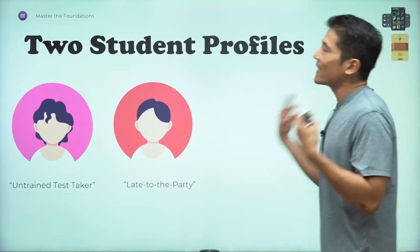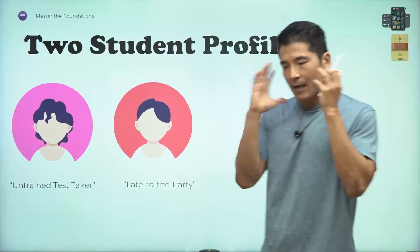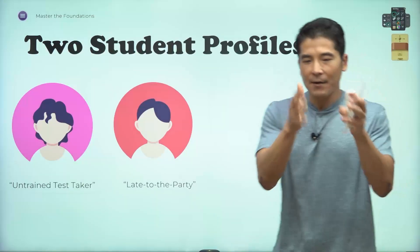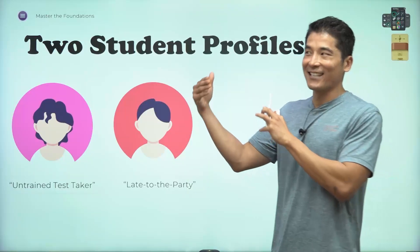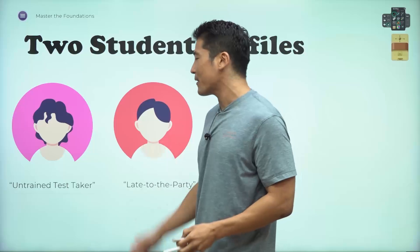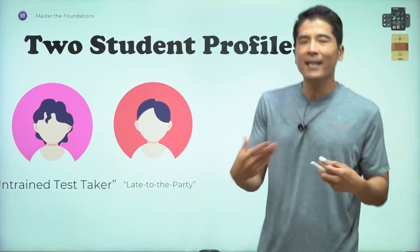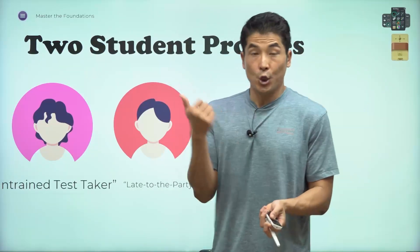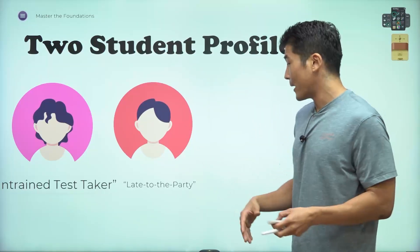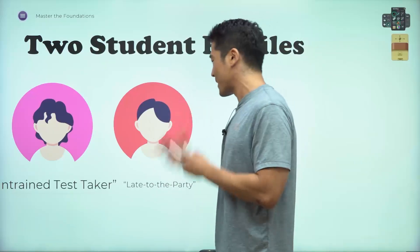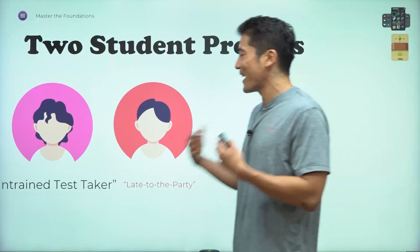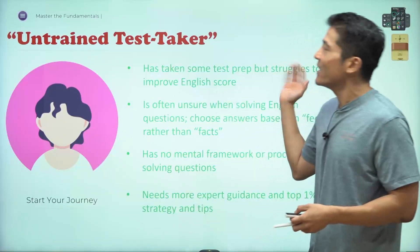Who exactly is this course for? I thought about this — the course is really designed for two types of students. One is my primary target and the other is a secondary type. The primary student is what I call the untrained test taker — a student who just needs more training and more repetitions.